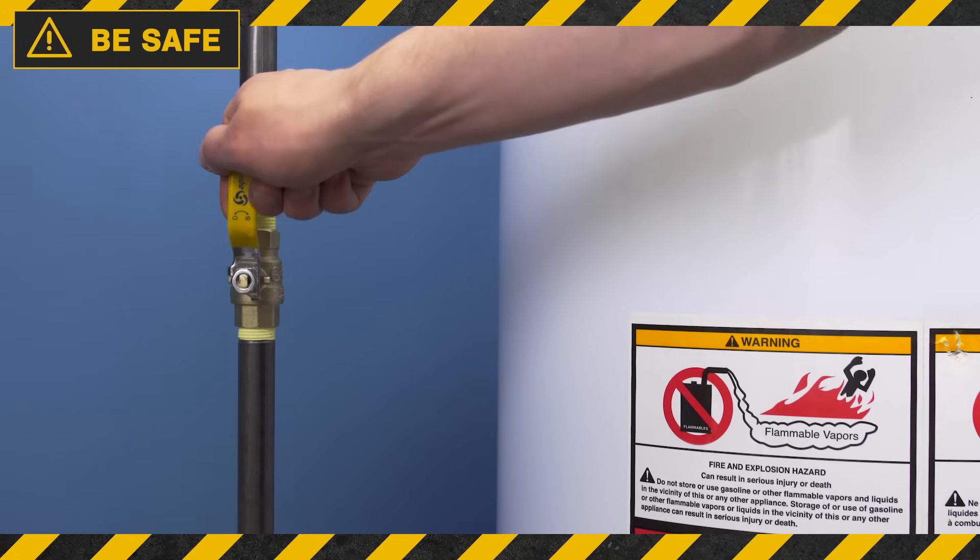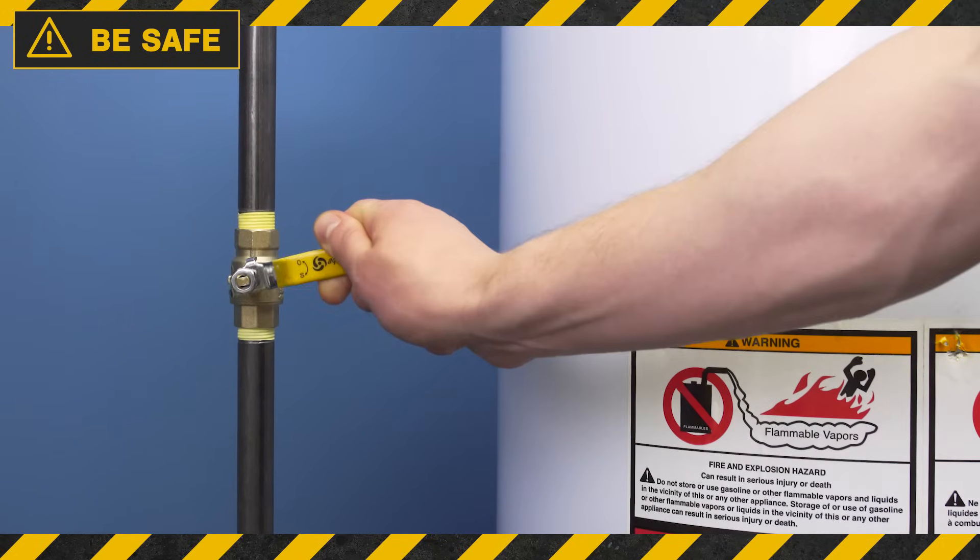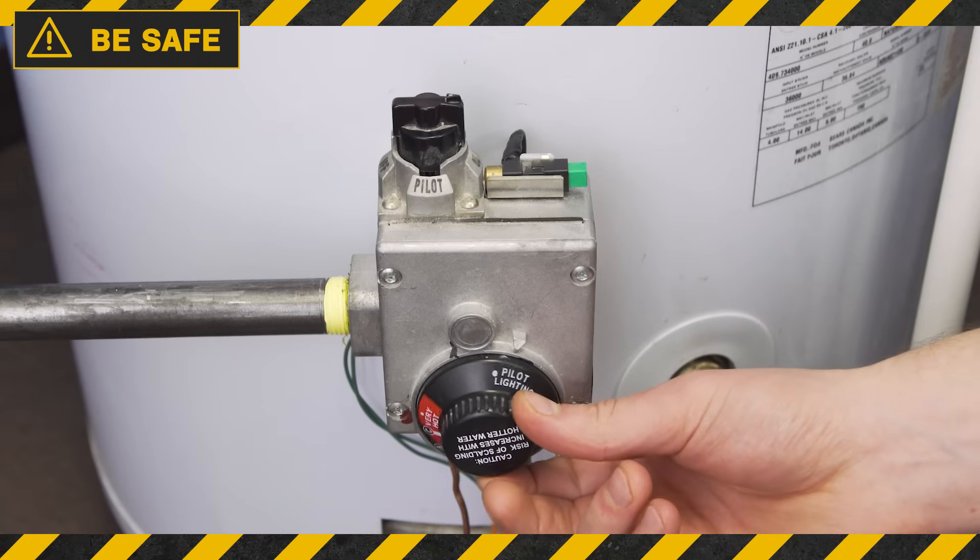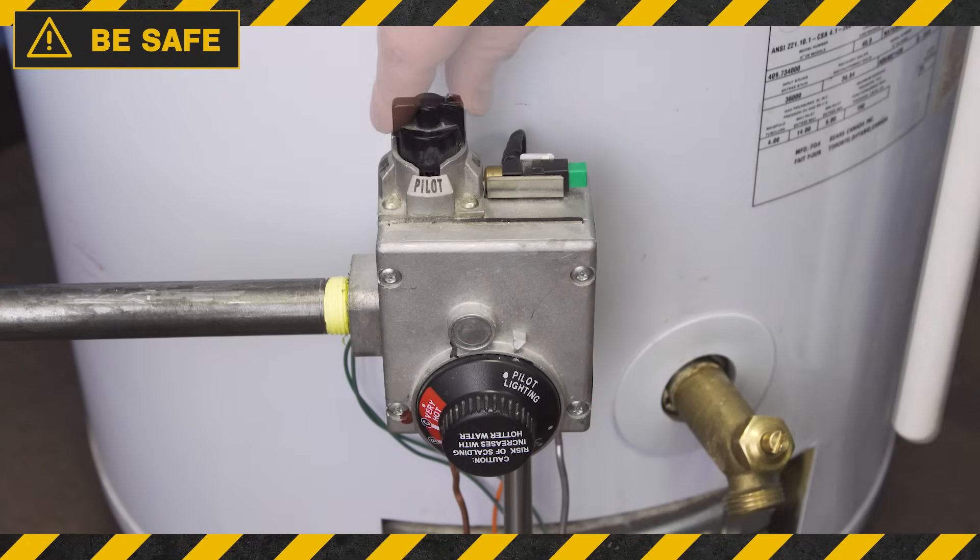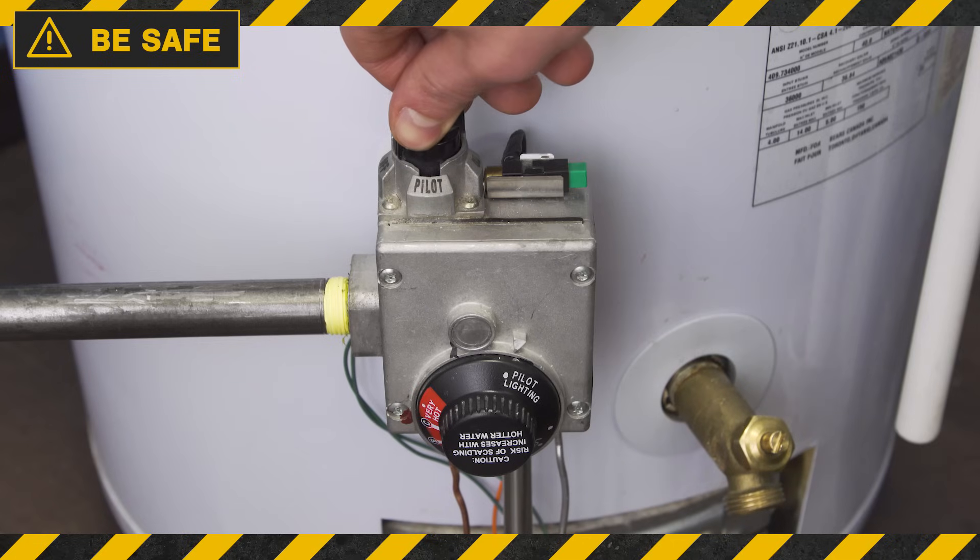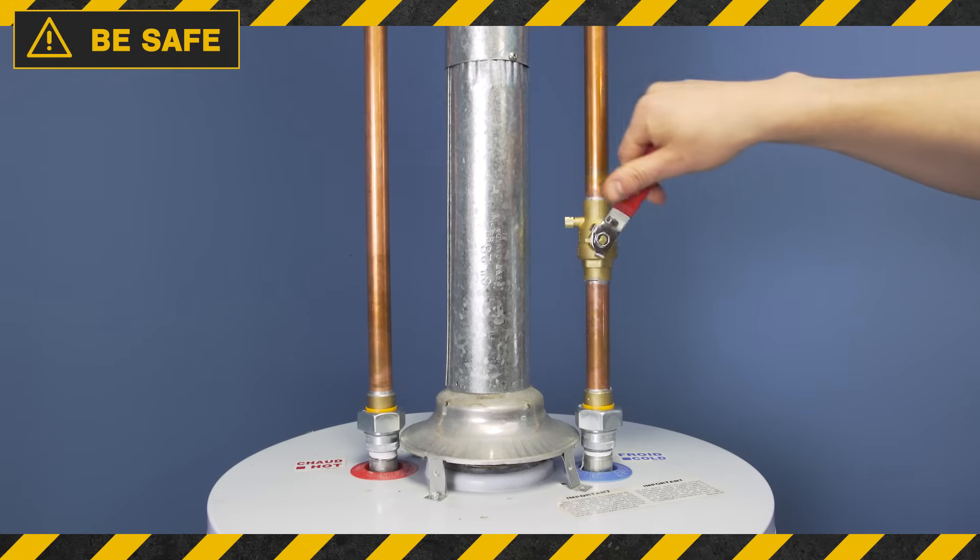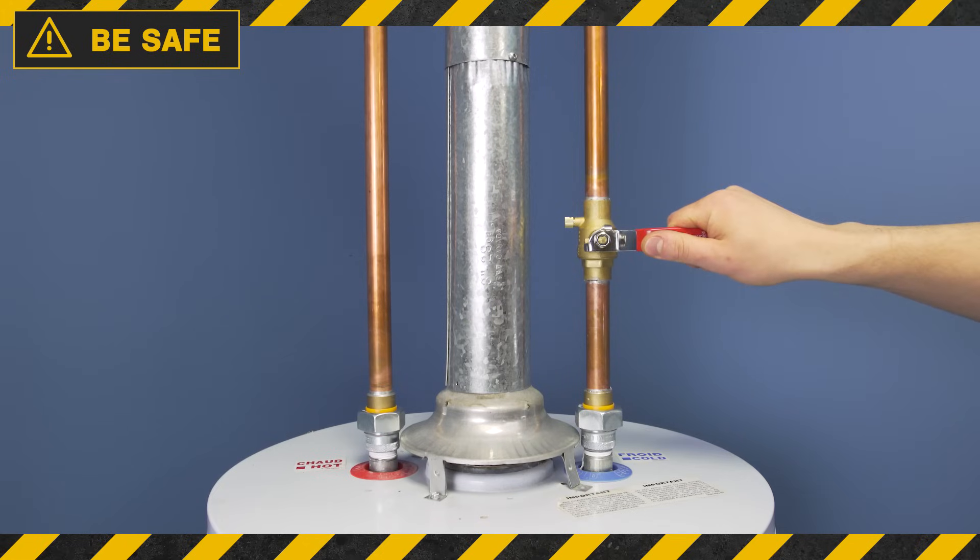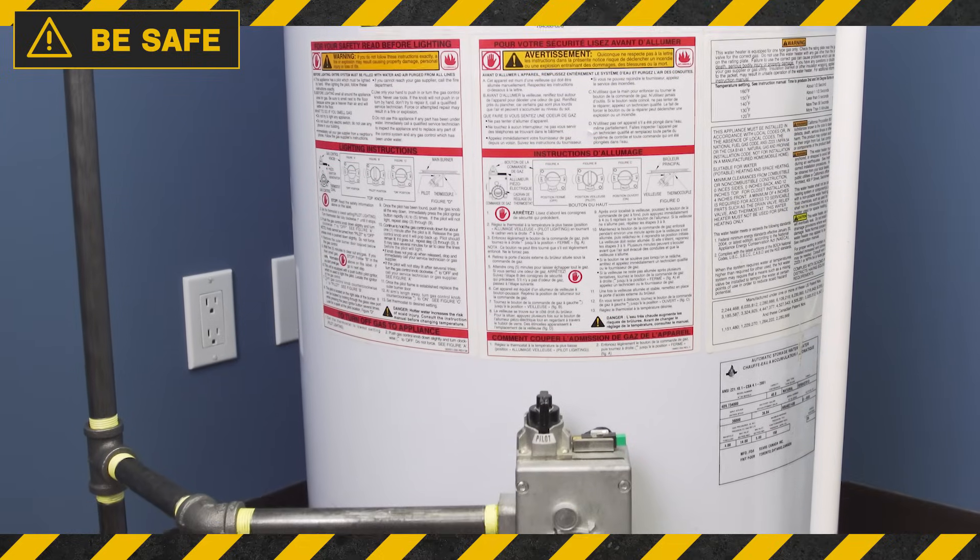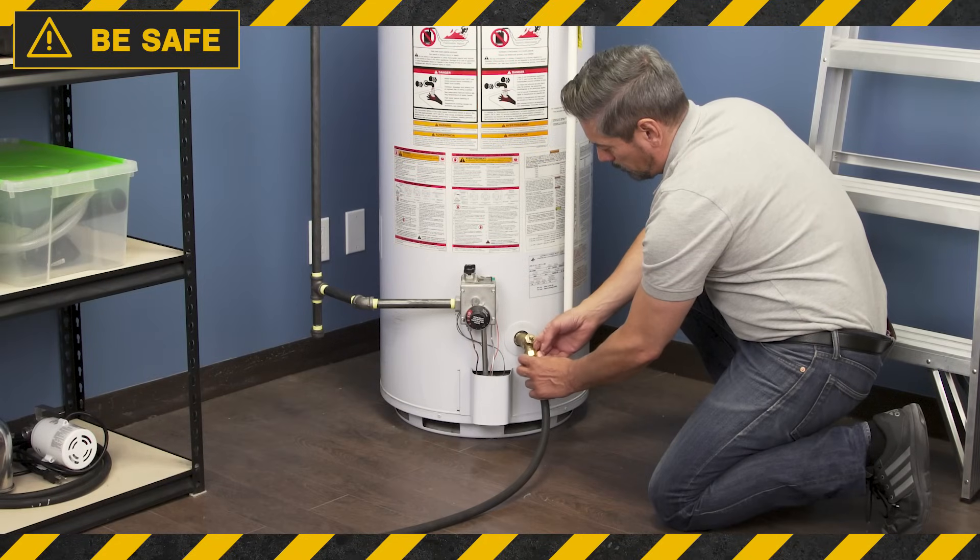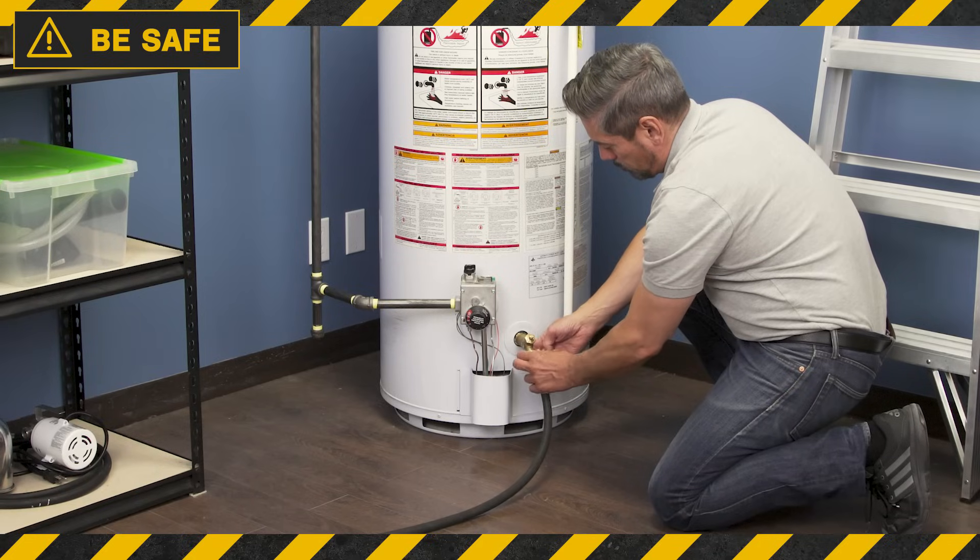First turn the gas supply off, or perpendicular to the pipe. Now set the water heater to the pilot setting, and turn the gas control off. Next shut off the cold supply. Keep in mind that the water inside the tank is still hot, so use caution when draining or accessing the tank.